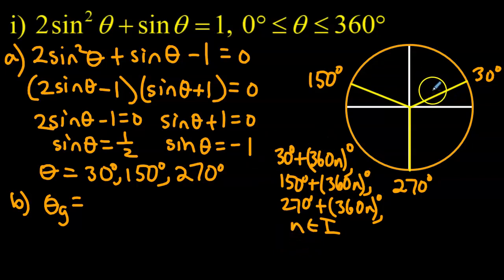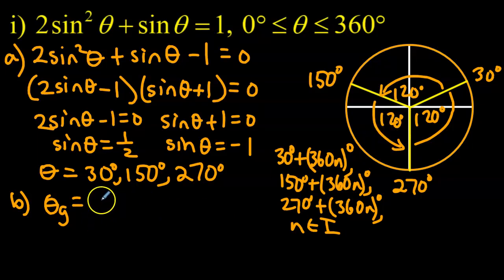You'll notice that the difference between 30 and 150 is 120 degrees. And if you add another 120 degrees to 150, you get 270. If you add another 90 you get to 360, and then 90 plus 30 gives you another 120 degrees. So we are consistently adding 120 degrees to go from solution to solution. When you find that, you can condense the number of statements for the general solution.